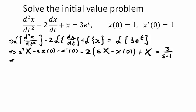Now we need to solve this for capital X. Moving everything with X to the left-hand side and factoring, we get X times (s² - 2s + 1) on the left-hand side.